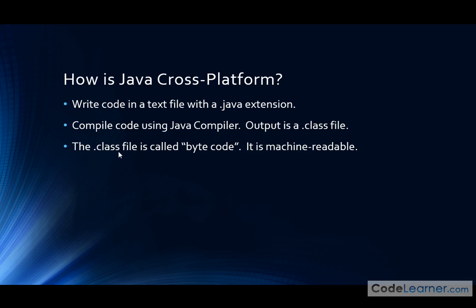Now the .class file is called bytecode. That's just something I'm teaching you because it's interesting to know and you might read about it in books. It's called bytecode, and it's machine readable. So in other words, the .java file that you write, you can open it in a text editor and you can read it — it's going to be words and symbols in a text file. Now the .class file after the compile process is something that you're not able to read. It's something a computer is able to read and interpret. This translation process from the .java file to the .class file is called compiling the program.